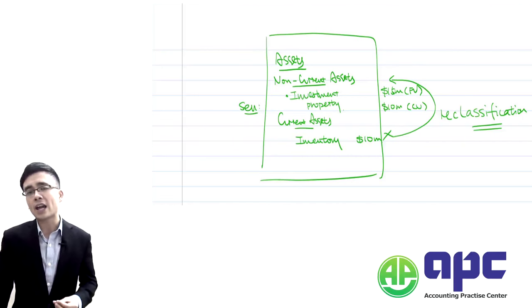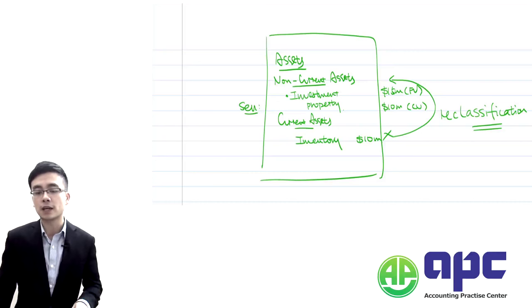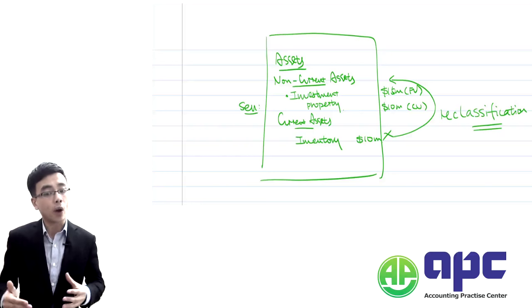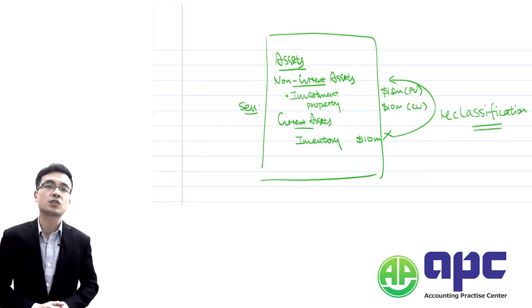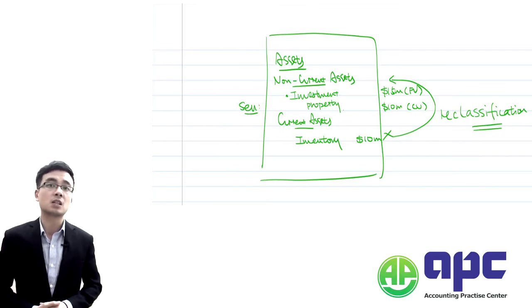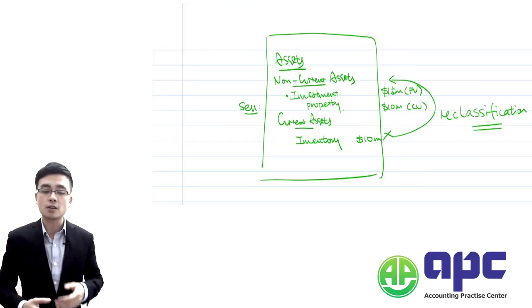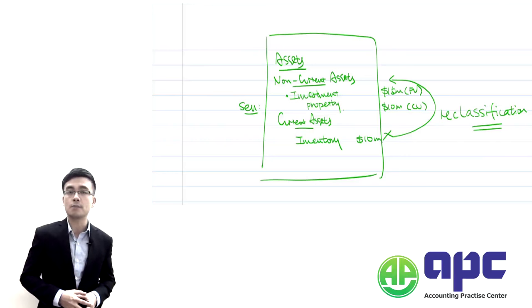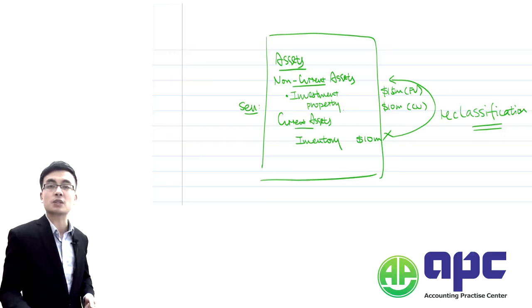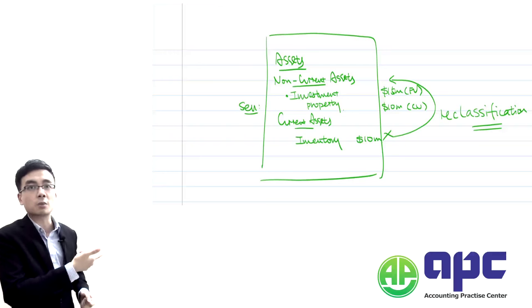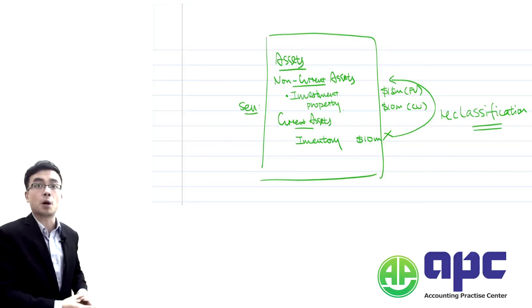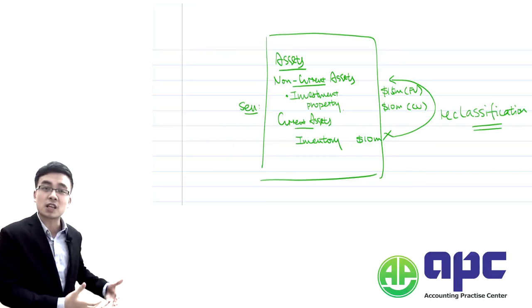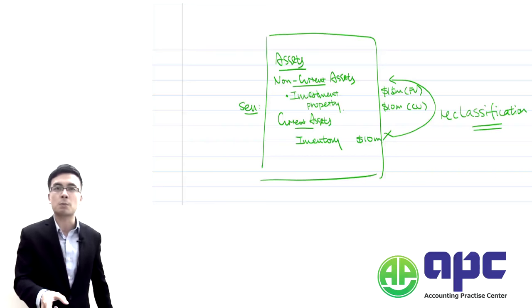Relevant means whether or not this figure will help the investor to buy or sell shares — whether the figure of the investment property will help the user in investment decision making. If I were to buy a company and I see your investment property is just $10 million, but looking at the marketplace there are similar investment properties worth $15 million, your company's investment property is just $10 million.